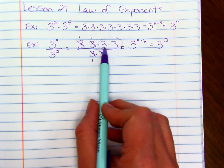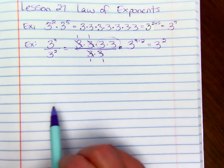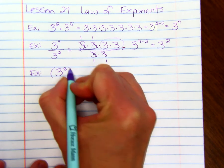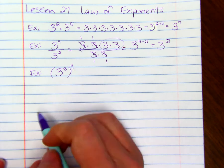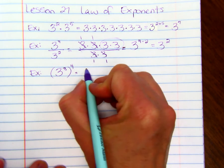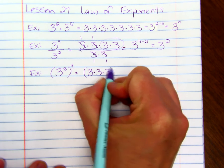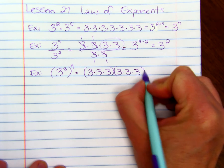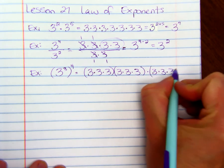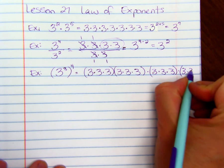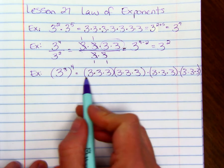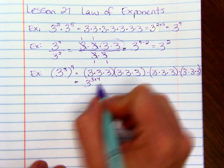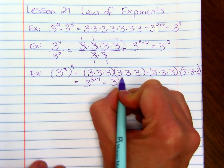So when we are dividing using exponents with the same base, you're going to subtract the exponents. Now if we are raising a power to a power, so that's like saying 3 cubed to the 4th power. That just means we're going to multiply 3 cubed by itself 4 different times.